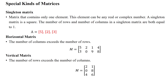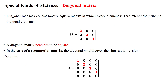Hello everyone. Here we will see different kinds of special matrices which are useful for machine learning and deep learning applications. The first one is the diagonal matrix. Diagonal matrices are mostly square matrices in which every element is zero except the principal diagonal elements, which have some values. This is called a diagonal matrix.